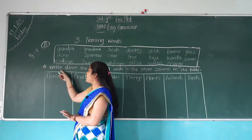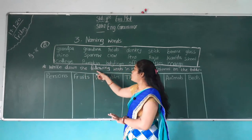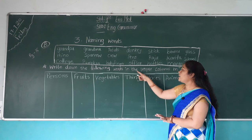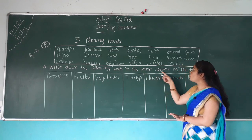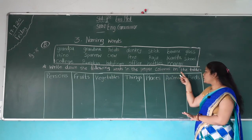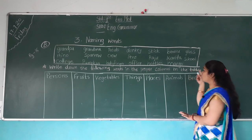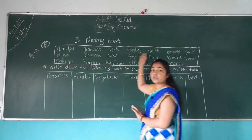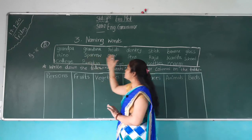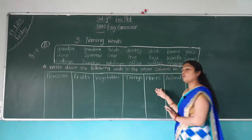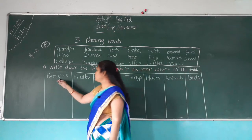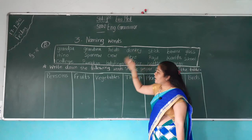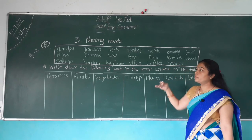Write down the following words in the proper column in the table. So many spellings are given here, and this table is also given in your book. The columns are: person, fruit, vegetables, things, places, animal, and birds. We have to divide the spellings and write each word in the proper column.